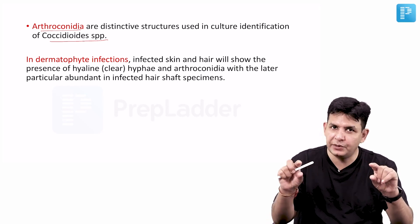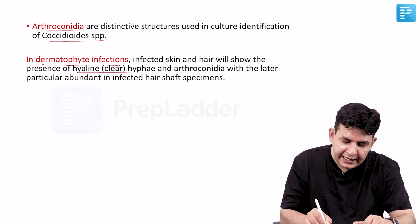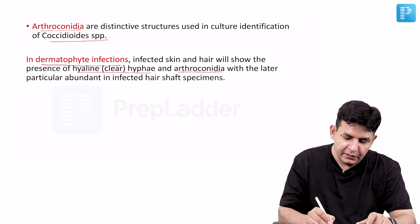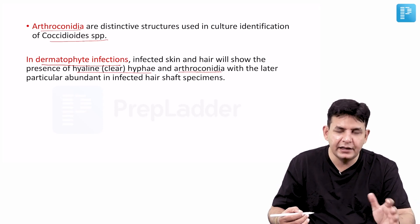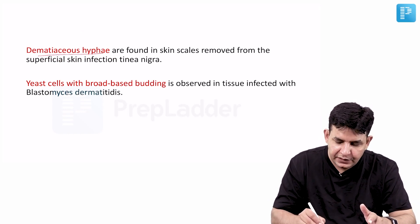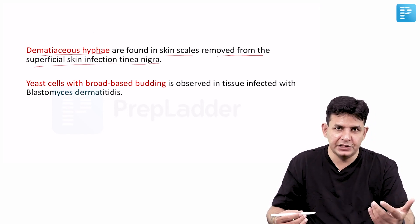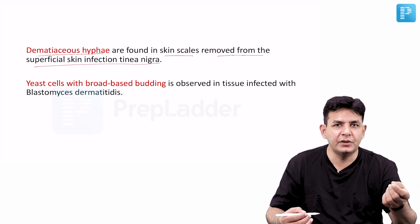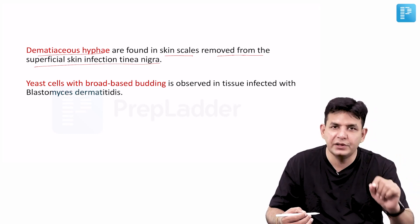Arthroconidia are rectangular-shaped conidia. In dermatophytic infections, you observe hyaline or clear hyphae, and arthroconidia — also rectangular-shaped — are seen here as well, observed in skin, hair, and nails. The dematiaceous hyphae are found in skin scales removed from superficial skin infections like tinea nigra. Dematiaceous means pigmented. Pigmented hyphae are found in infections caused by organisms like Hortaea werneckii, which causes tinea nigra — that is also a dematiaceous organism.